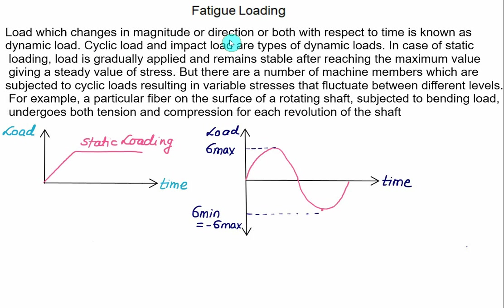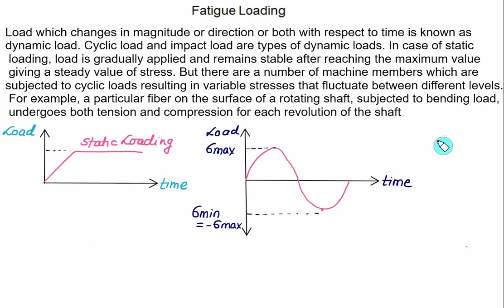A load that changes in magnitude or direction or both with respect to time is known as a dynamic load. Cyclic loads and impact loads are types of dynamic load. In static loading the load is gradually applied and remains stable after reaching its maximum value, giving a steady-state stress value. However, many machine members are subjected to cyclic loading resulting in variable stresses that fluctuate between different levels — for example, a piston and cylinder arrangement in an IC engine.